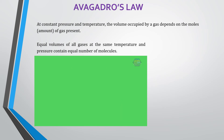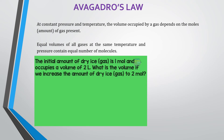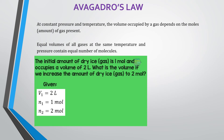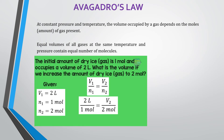For example, the initial amount of dry ice is 1 mol and occupies a volume of 2 liters. What is the volume if we increase the amount to 2 mol? We identify the given values and substitute into the formula V1/n1 = V2/n2. Solving for the final volume gives 4 liters. So doubling the amount (moles) also doubles the volume.